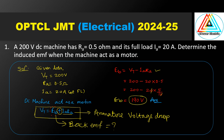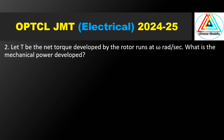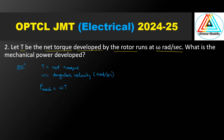Next question, question number 2. Let T be the net torque developed by the rotor running at omega radians per second. What is the mechanical power developed? The mechanical power developed is equal to omega into T.